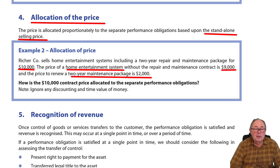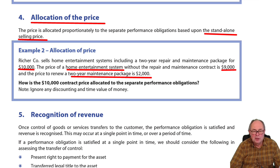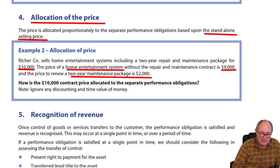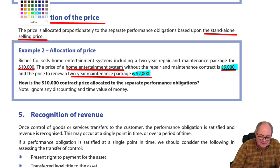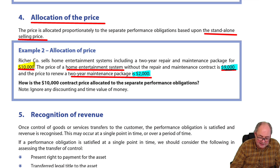Because the customer bought the bundle, they're going to generate revenue of $10,000. If they had bought these things separately, revenue would have been $11,000. So I need to allocate the revenue I'm actually receiving to the two performance obligations based on the standalone selling prices. The standalone selling prices are highlighted in blue and the bundle price is highlighted in yellow.